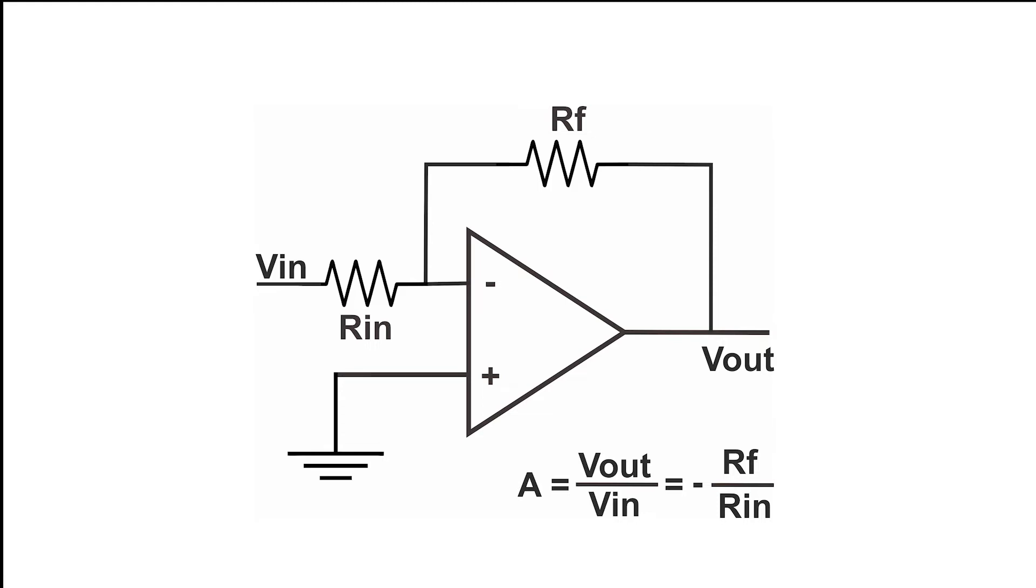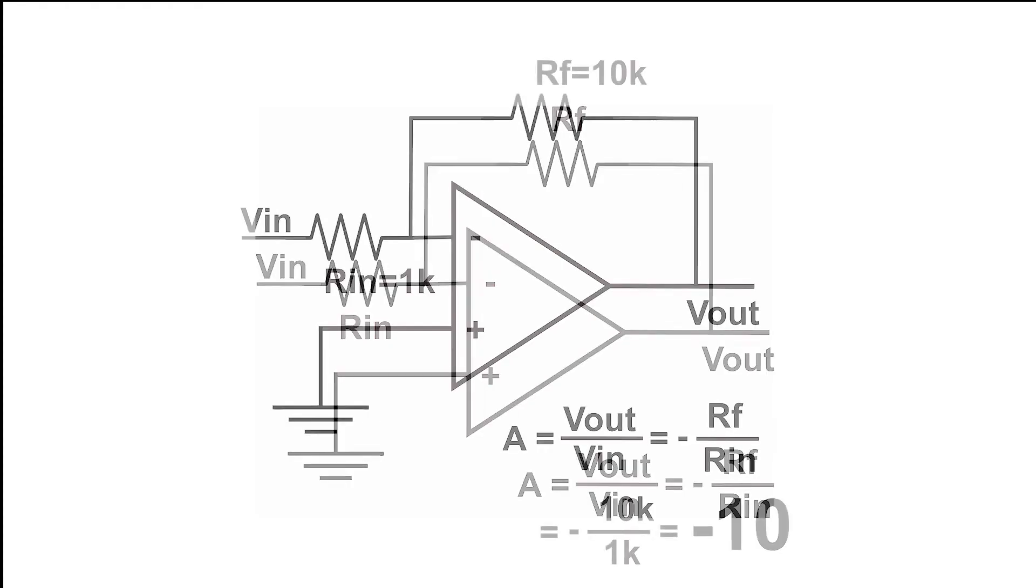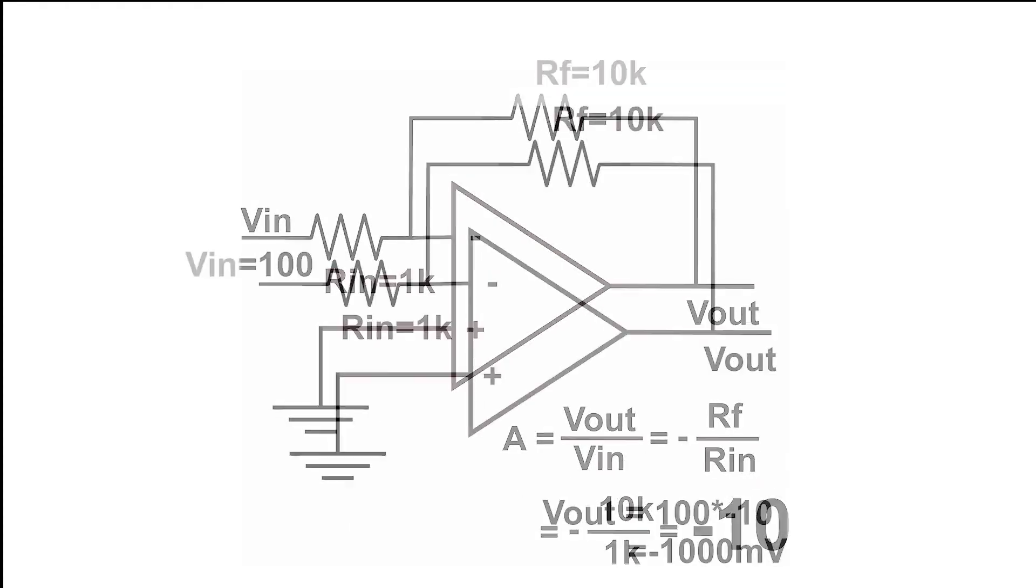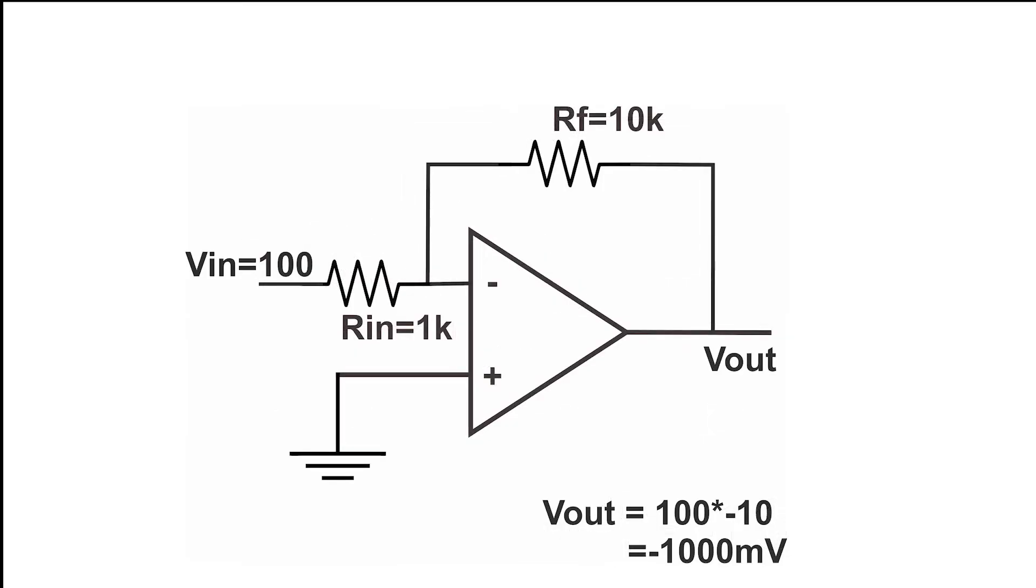So with the same resistor's value, we got minus 10 times amplification, and this configuration will give us minus one thousand millivolts if we have a 100 millivolt input. But in real life, when you make an inverting amplifier, make sure that you have also a minus power source, otherwise it won't work.